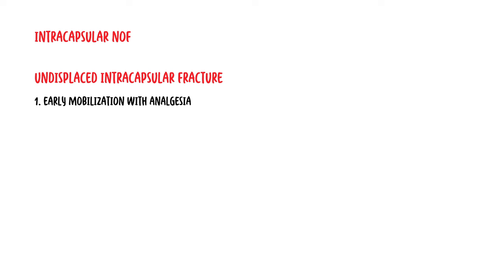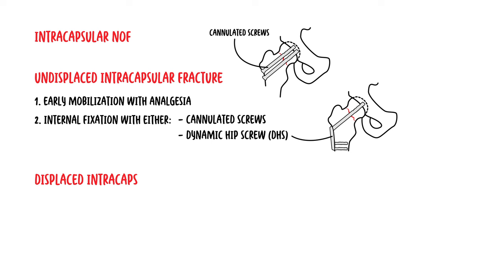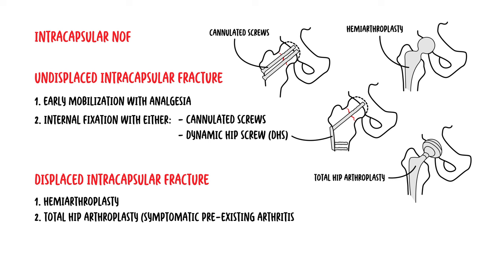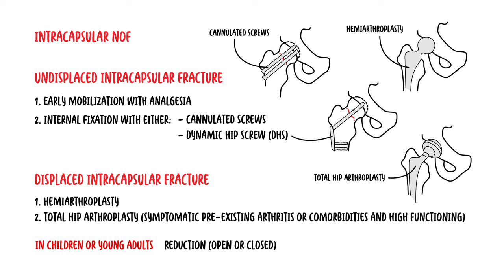For intracapsular neck of femur fractures, undisplaced fractures are treated by early mobilization with analgesia, and surgery by internal fixation with either cannulated screws or dynamic hip screws. Displaced intracapsular fractures are treated by hemiarthroplasty. Total hip arthroplasty can be used if symptomatic pre-existing arthritis is present or in patients with few comorbidities who are high functioning. In children or young adults, reduction — either open or closed — and fixation is employed.